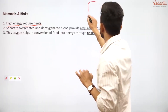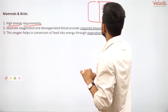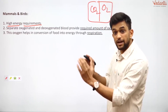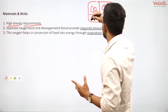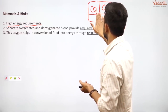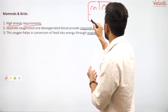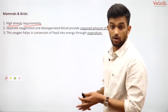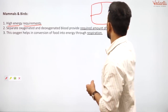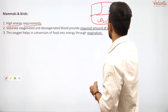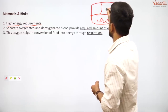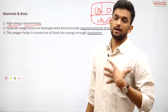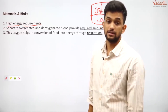In the heart, one side has oxygen-rich blood and the other side has carbon dioxide-rich blood — they are separated. Whereas in amphibians and reptiles, which have a three-chambered heart, CO2 and O2 get mixed up. That is why we compare mammals and birds with amphibians and reptiles.